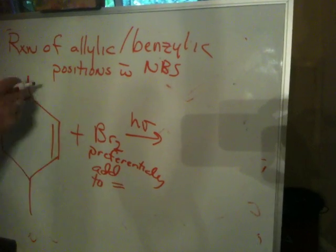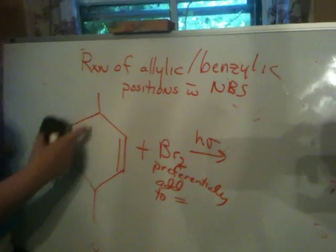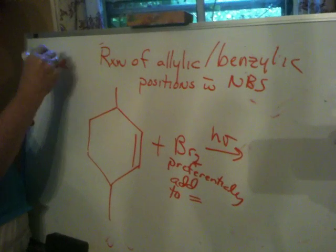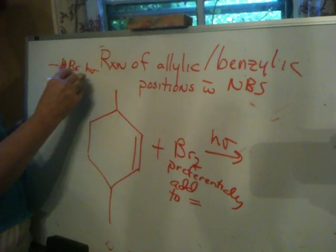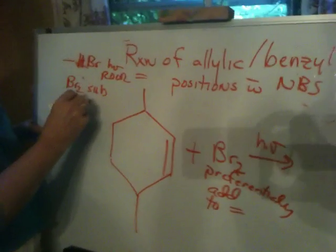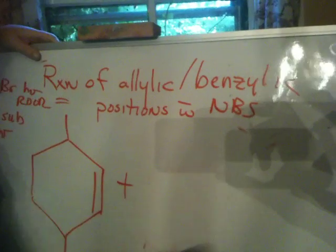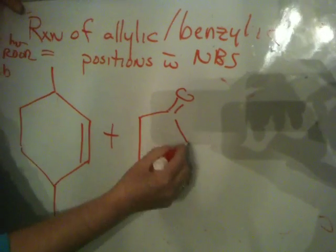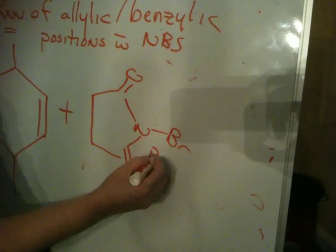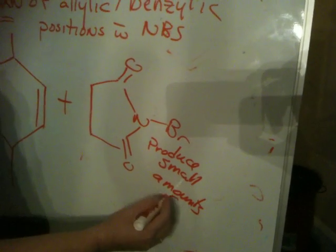You'll get Br here and Br here. You'll get some free radical reaction, but you'll mostly get Br added across the double bond. What we want to do is substitute allylically. We know that Br2 substitutes in a free radical situation. So instead of using Br2, I would use NBS — N-bromosuccinimide — it's a bromine source, and it's going to produce very small amounts of Br2 in the presence of light.